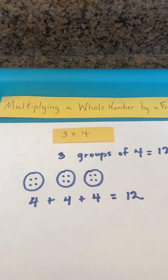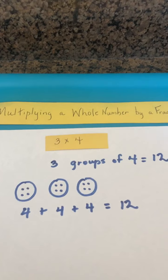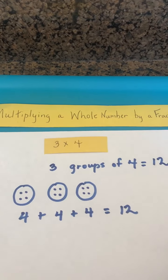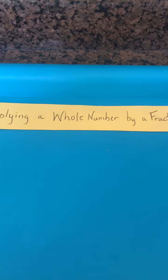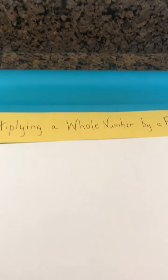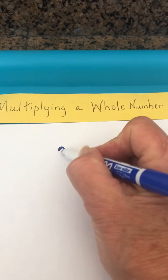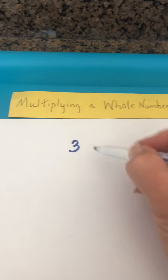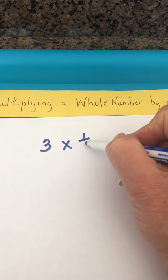So think about that as we change things and multiply a whole number by a fraction. Let's look at this problem where we still have the number of groups, but our second factor changes to a fraction.